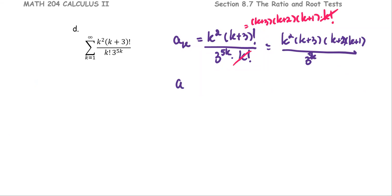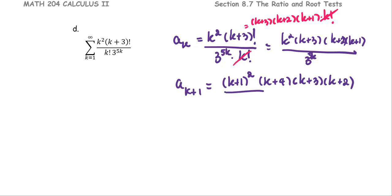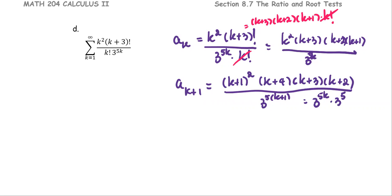From the simplified form of a_k, we derive a_{k+1}, which is the quantity k plus 1 squared multiplied by k plus 4, k plus 3, and k plus 2, replacing k with k plus 1, over 3 to the 5 times k plus 1, which equals 3 to the 5k times 3 to the 5. We then compute r as the limit as k approaches infinity of the absolute value of a_{k+1} divided by a_k.